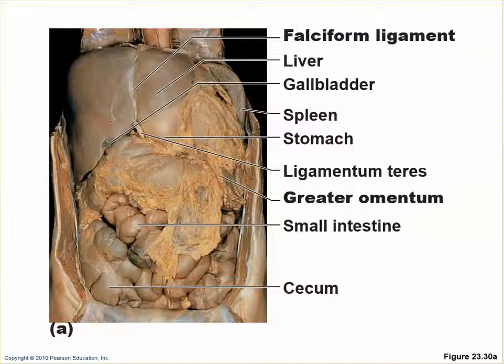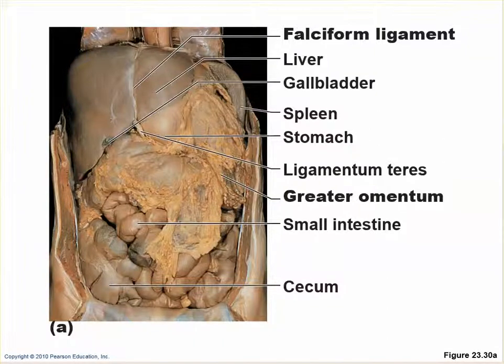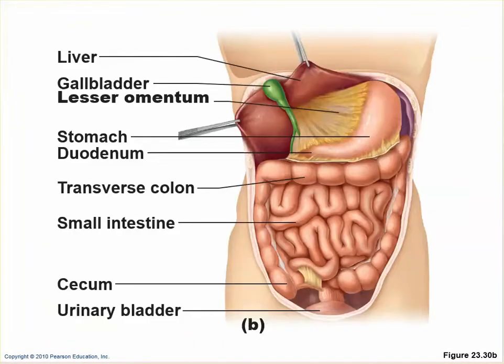A lot of belly fat, when people have protruding abdomens, is the fat in the greater omentum — not all of it, but it's a contributing factor. In the picture, this part is the lesser omentum and this part is the greater omentum.